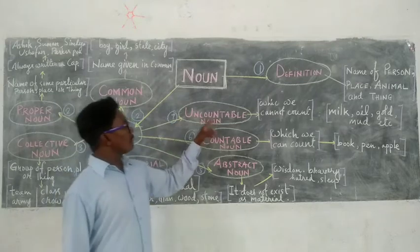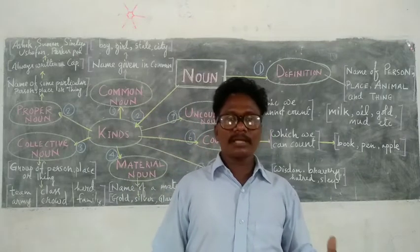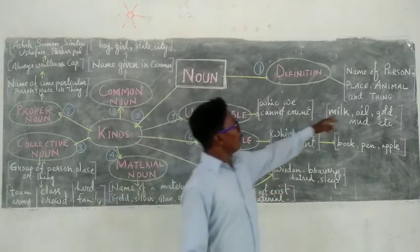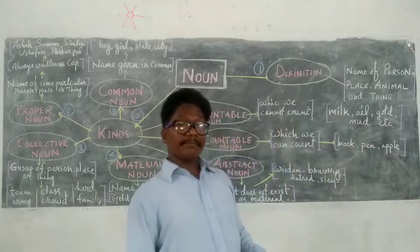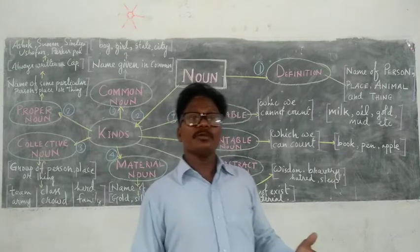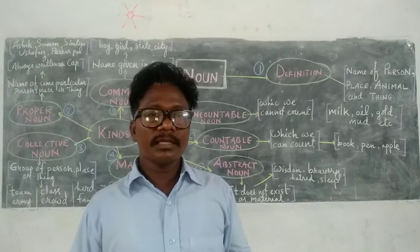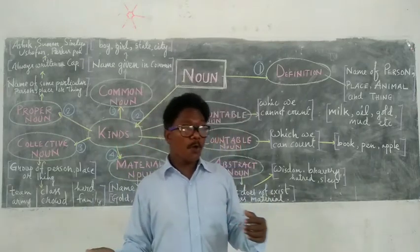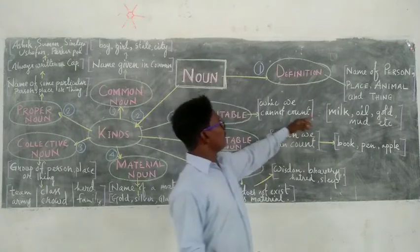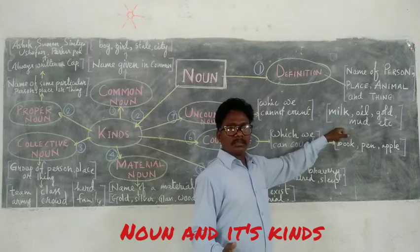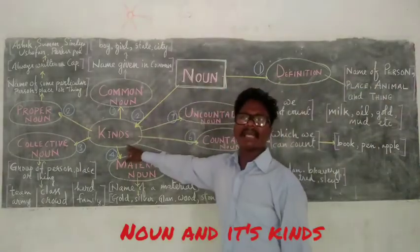Seventh: Uncountable Noun. Uncountable noun is the opposite of countable — which you cannot count. Examples: Milk, Oil, Mud, etc. If I ask you how many milk did you drink, you cannot tell. If I give you a glass of milk and tell you to count, you cannot, because it is uncountable. Similarly, oil is uncountable. So these are uncountable nouns. We have seen the noun definition and all the types of noun.